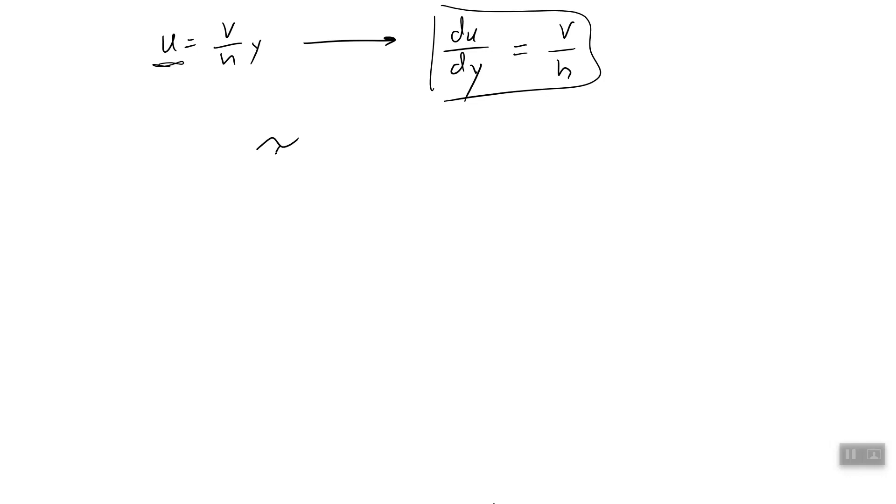Let's plug that into Newton's law. The shear stress equals viscosity times du dy, which tells us the shear stress is equal to viscosity times the velocity divided by h. And you say, well, we're supposed to find it at the wall. How do we find it at the wall? Well, this is interesting.